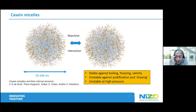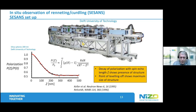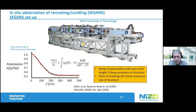These micelles are surprisingly stable — you can boil them, you can freeze them, you can put them in a lot of salt, and they all survive that. But they do not survive acidification, and they do not survive high pressure — then they really fall apart. First we look at the effect of destabilizing by cutting off or collapsing the hairs. This was already shown by Wim Baumann; I did the work on casein together with him, so I won't go into this deeply.